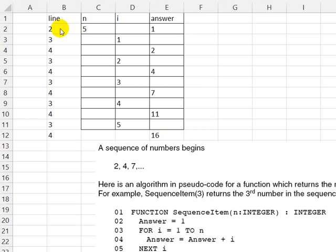Having traced through the algorithm, taking each line at a time, we know that the answer will become 16. So this function will return the value 16 if n is 5.